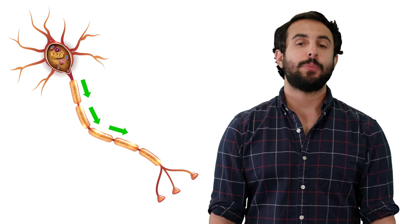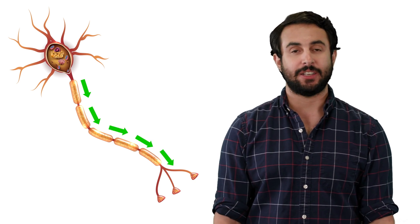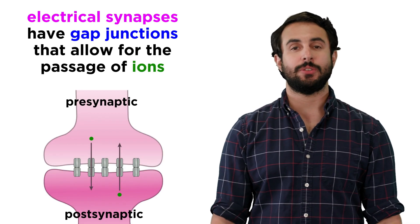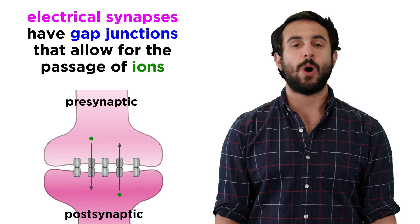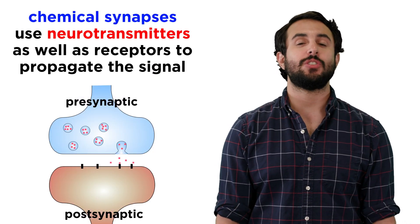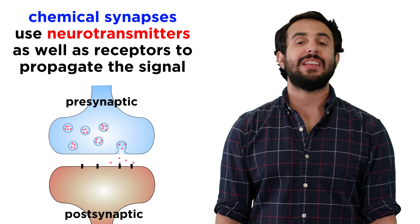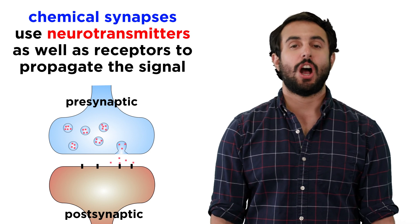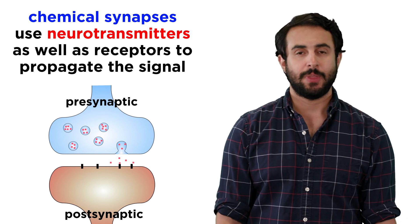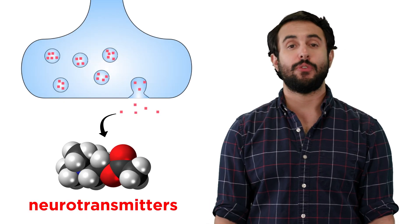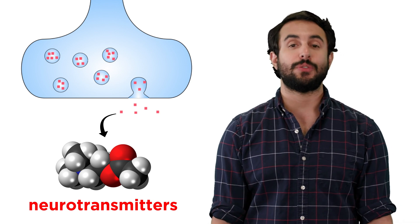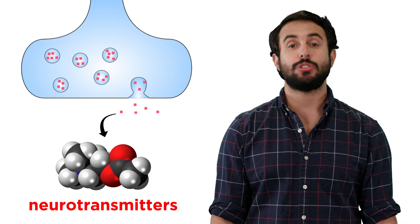Electrochemical activity propagates along an axon, resulting in one of two things. With an electrical synapse, or gap junction, ions can flow from one cell to the next. But with a chemical synapse, neurotransmitters are released at the axon terminals. These interact with receptors on the postsynaptic neuron, and then the signal continues. But what are these neurotransmitters that traverse the synaptic space? There are different types, and they serve different functions, so let's get a closer look.